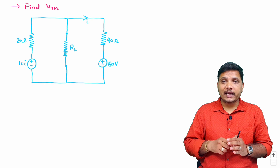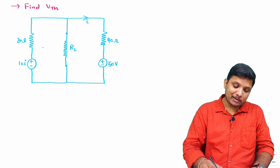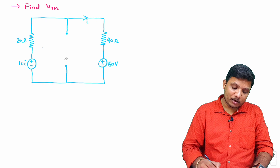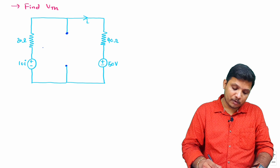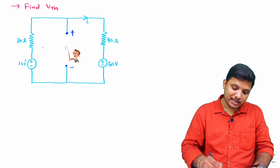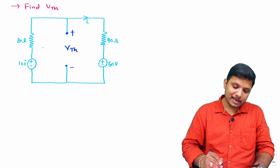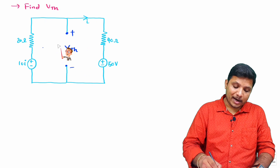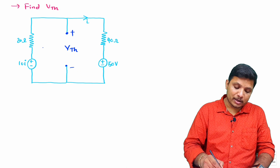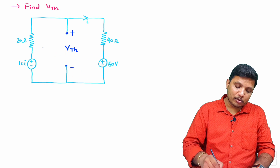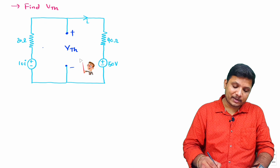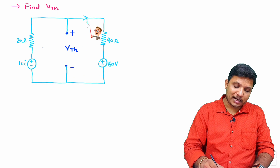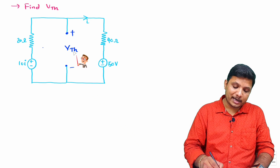For V_th calculation, the load terminal is open-circuited and we identify the voltage across it with plus-minus polarity — that is V_th. We take the loop to identify current I, and then based on that current we find V_th.